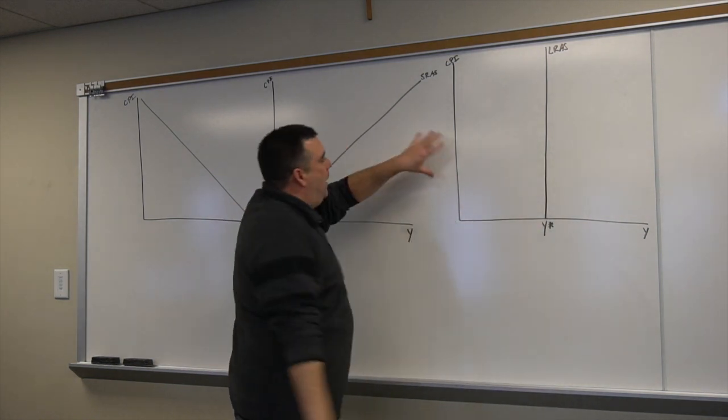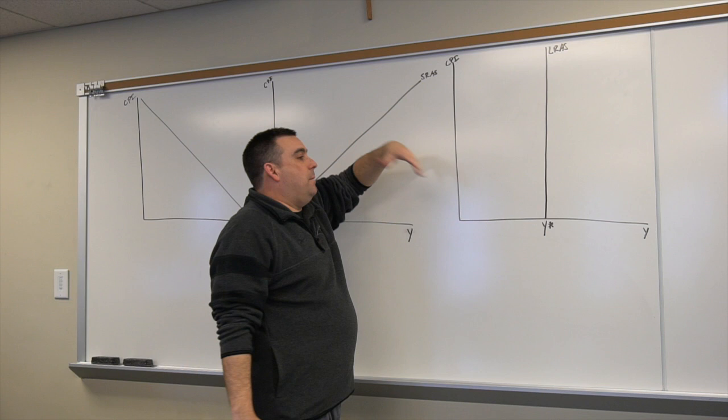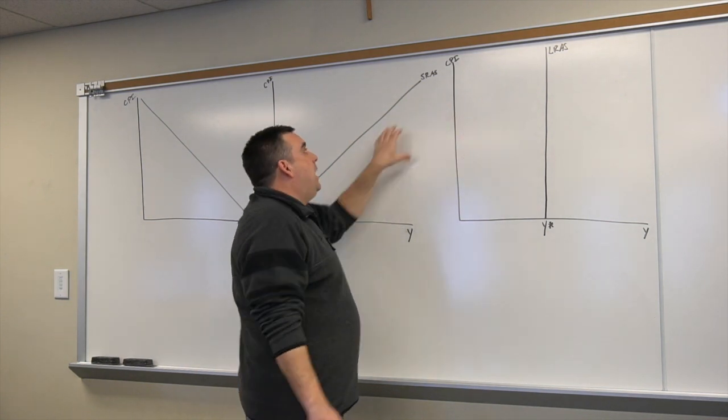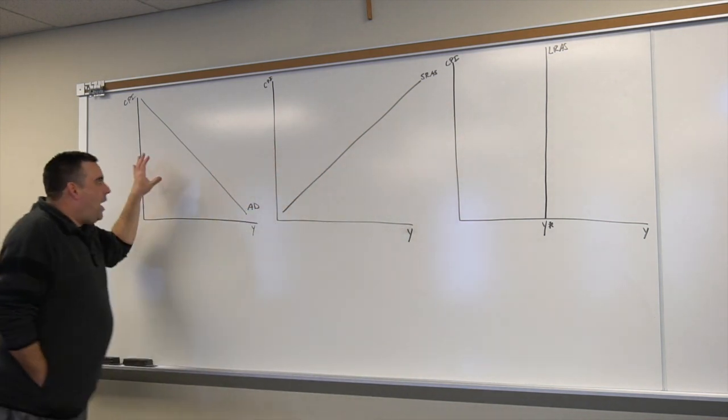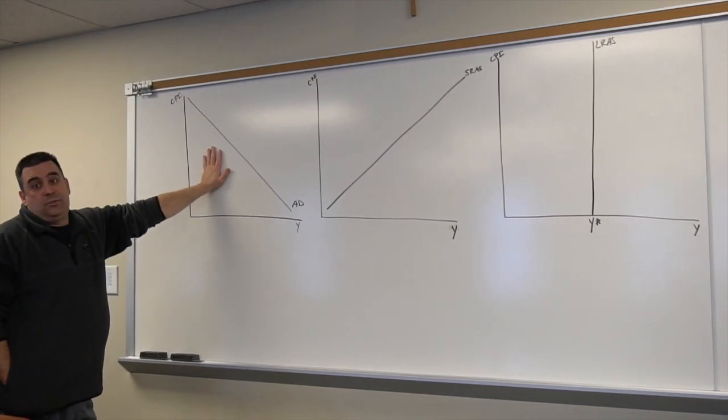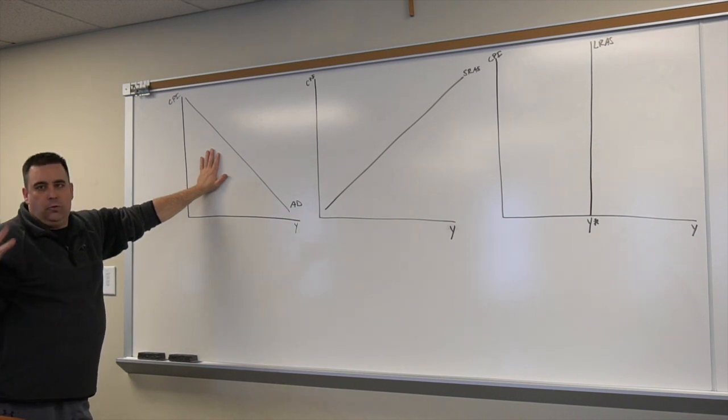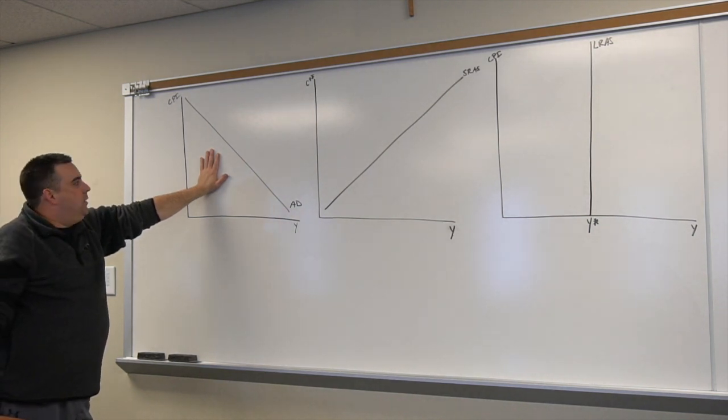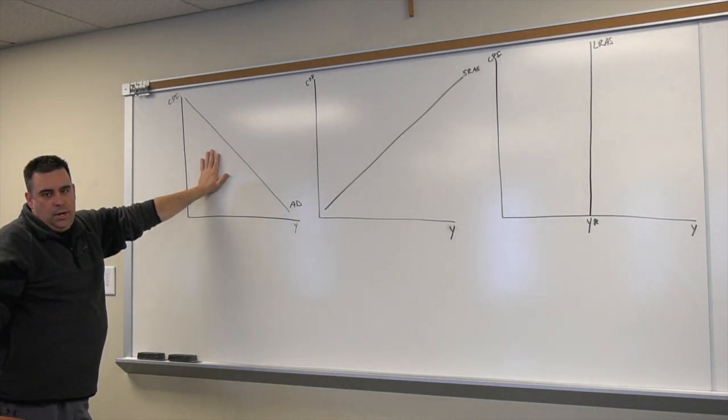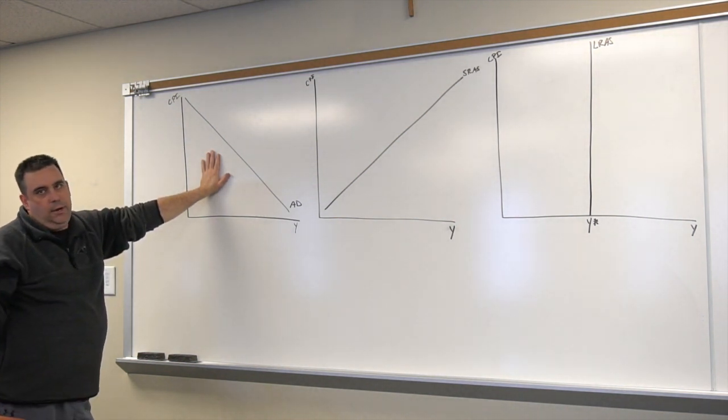That's why I said we'd come back to that demand graph. We separated out aggregate supply into long run and short run. Why did we not separate out aggregate demand? In reality, you do separate aggregate demand into long run and short run. In the short run, we expect it to be identical to the supply and demand model you learned in Econ 1900.